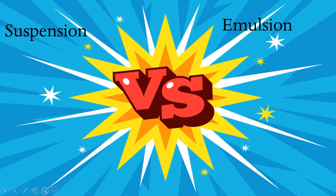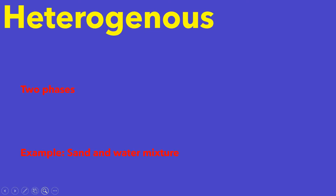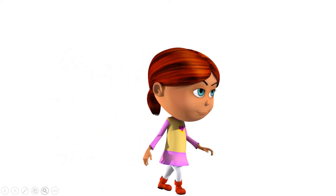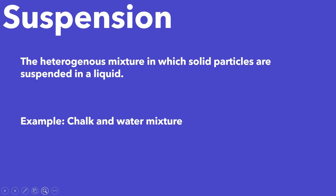The point that creates confusion in both the topics is that they both are heterogeneous — it means they are having two separate phases. Then what could be the difference in them? But there is a difference. Let us check it out. The heterogeneous mixture in which solid particles are suspended in a liquid — that is what suspension is.